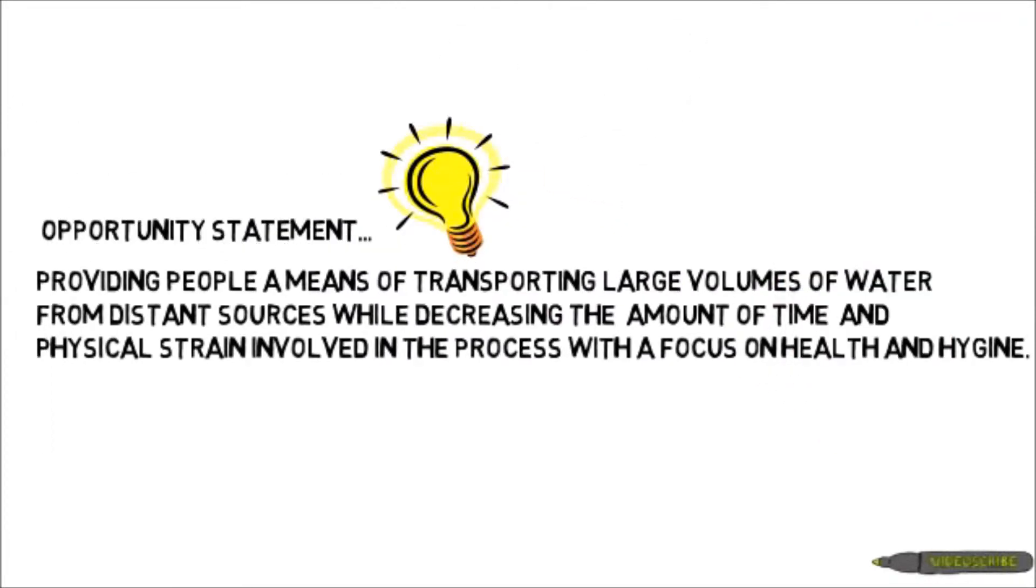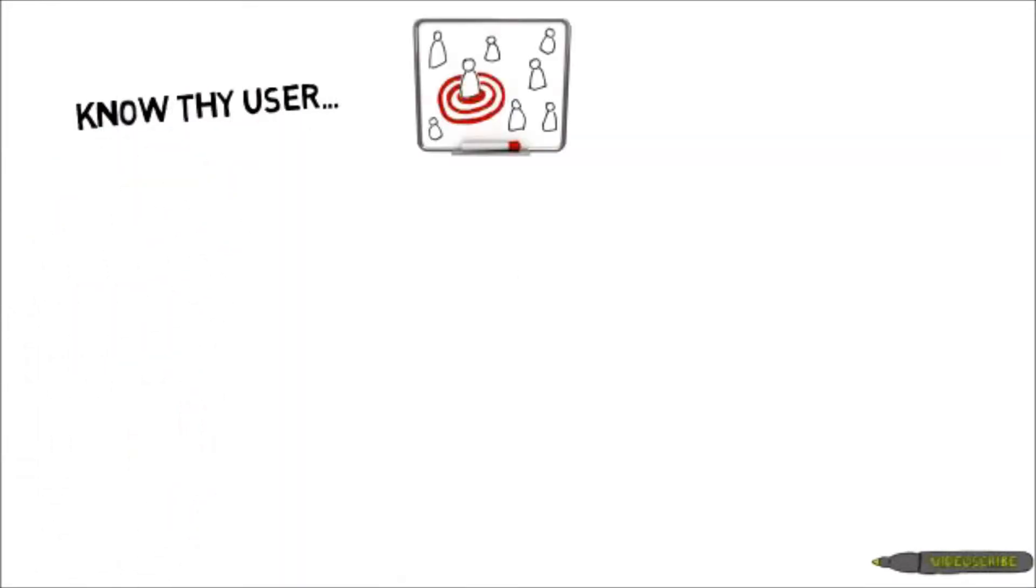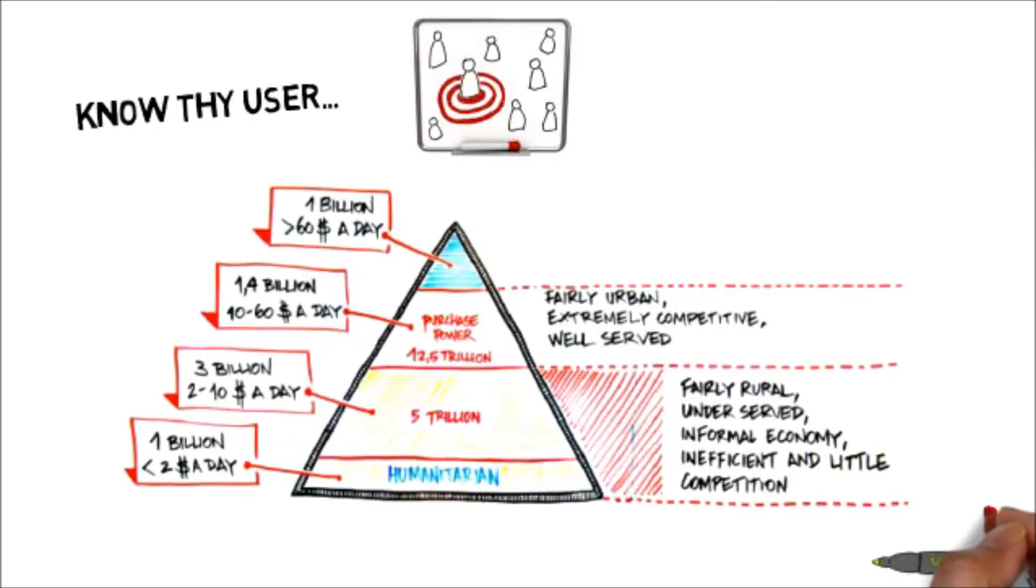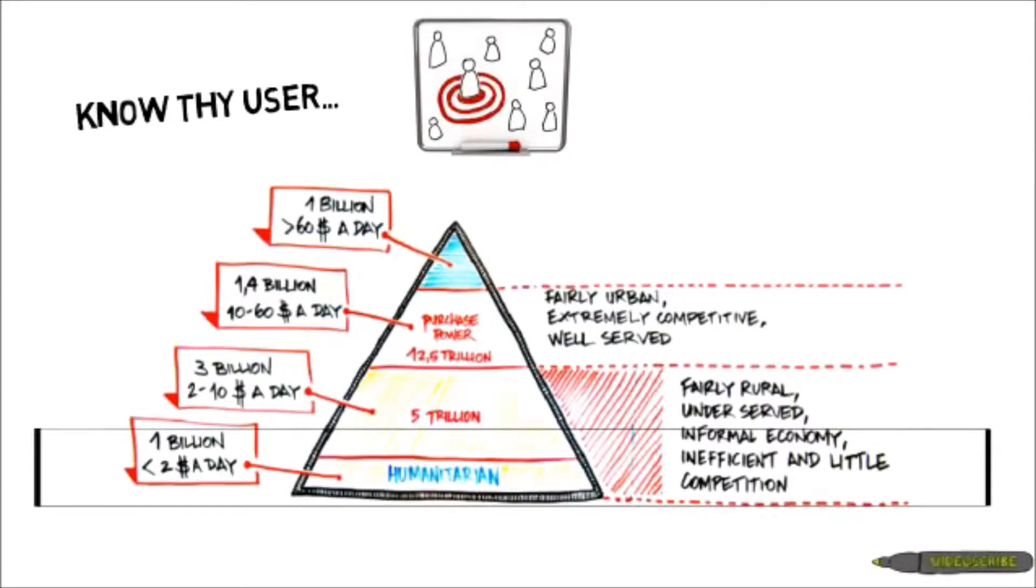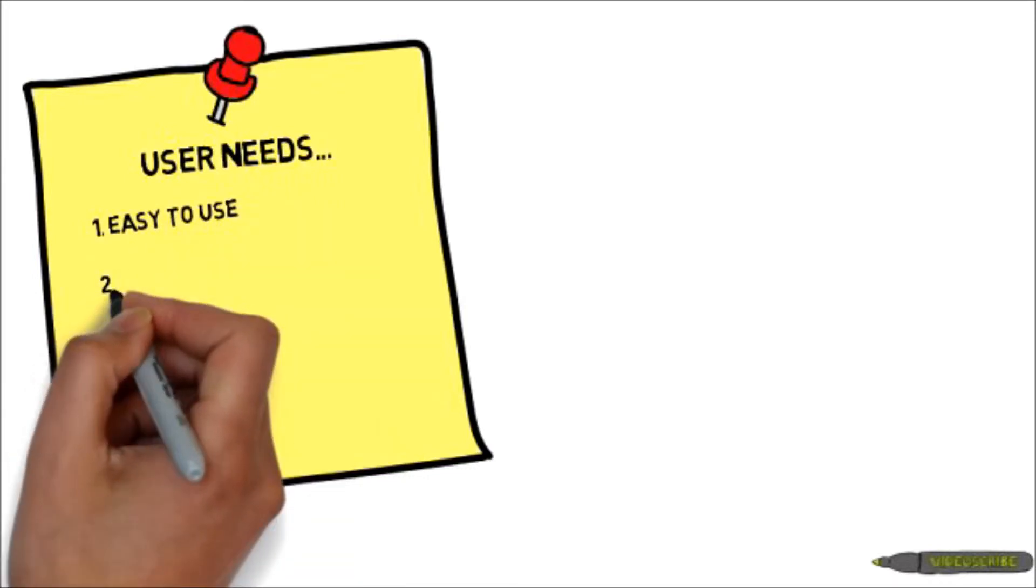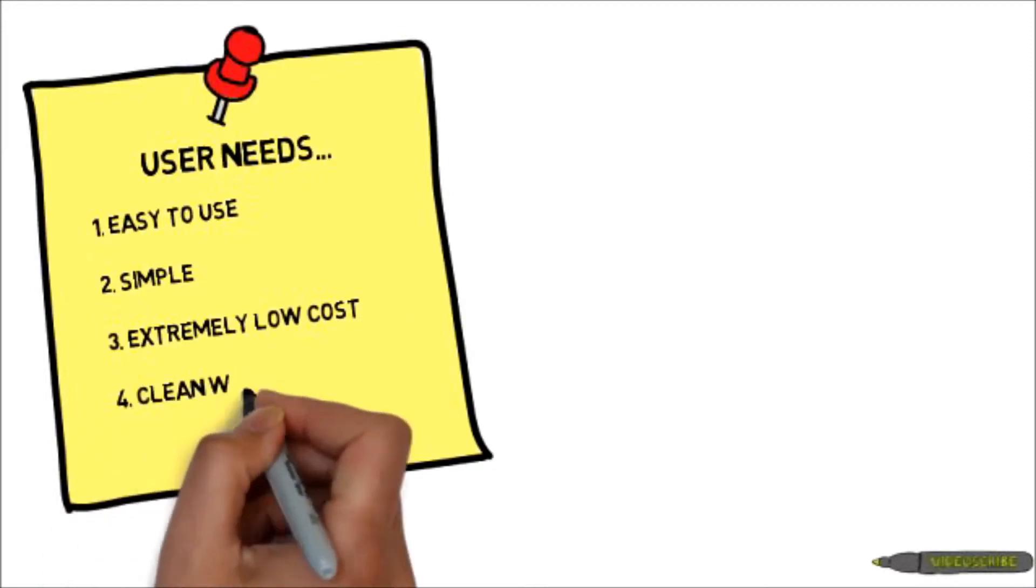Let's get to know our user. We target the bottom of the financial pyramid, consisting of people having an income lesser than a mere two dollars a day, living at least two to three miles away from the source. That are hand pumps and borewells which provide them moderately pure water. Our user needs a solution that's easy to use, simple, extremely low cost, and finally a solution that provides them clean water.